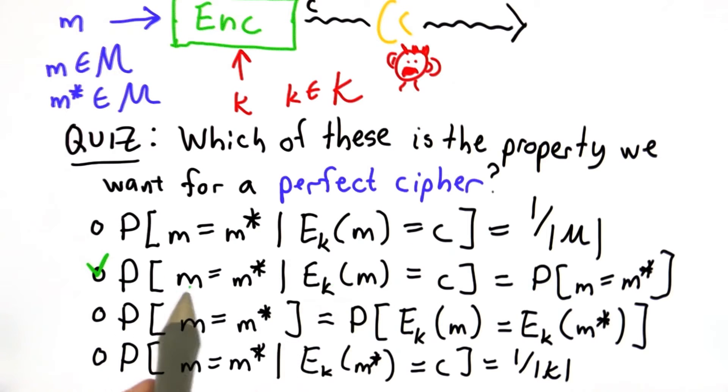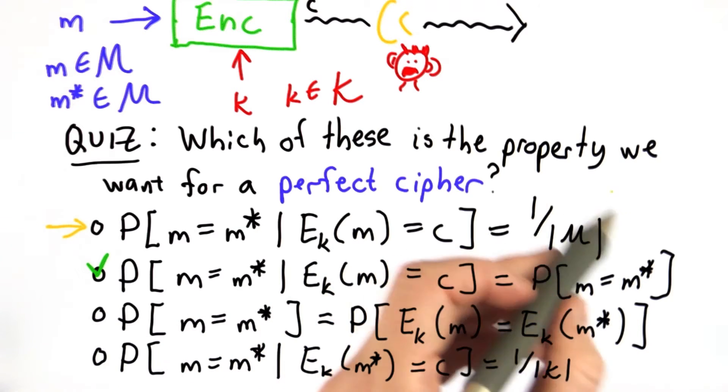And in order for the attacker to know nothing, well, that's the same as the probability that the message is m star without knowing the ciphertext.